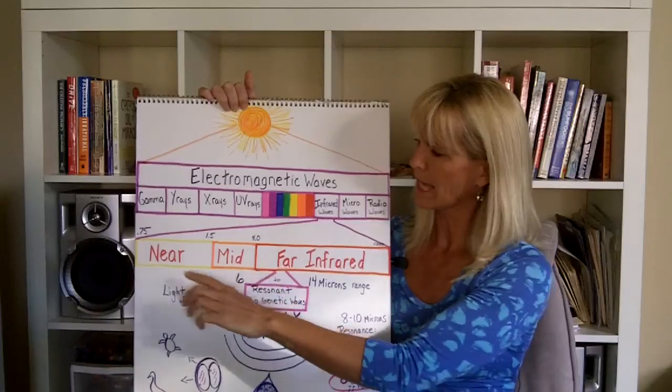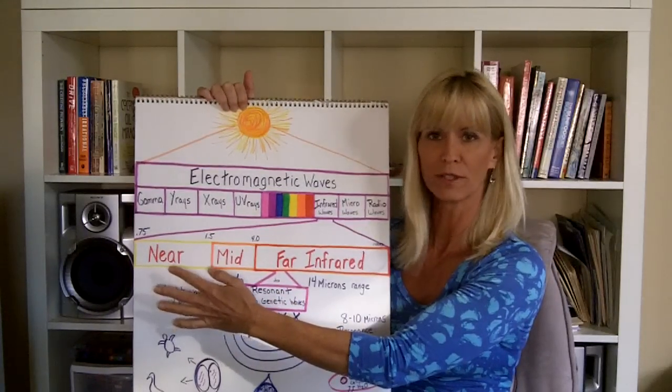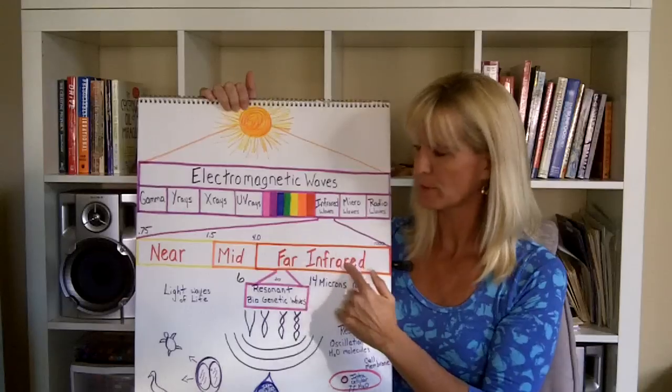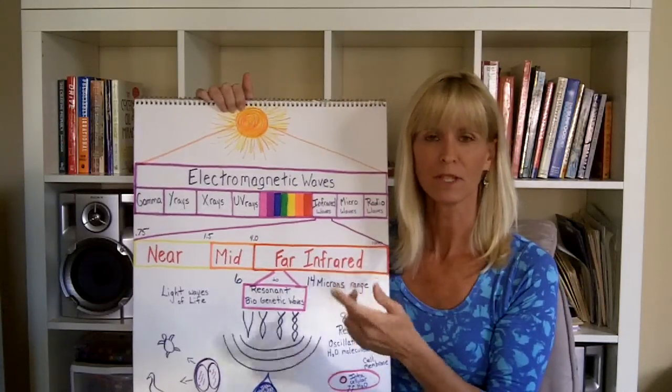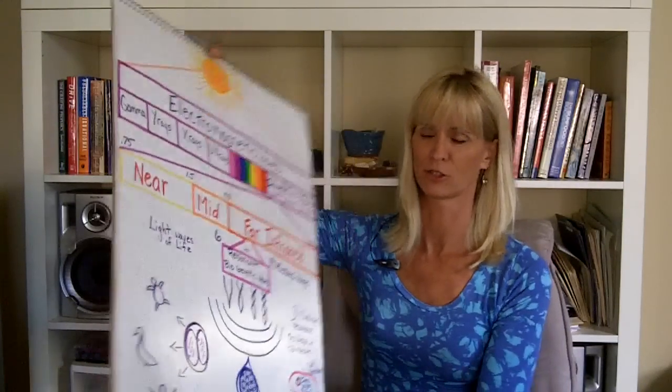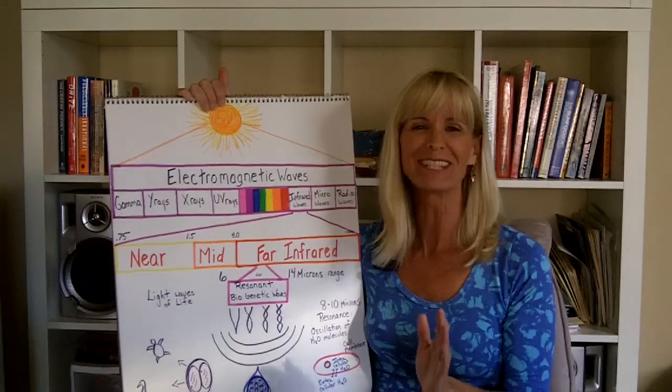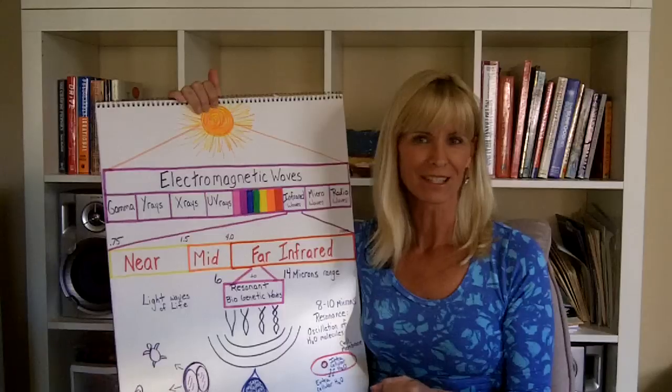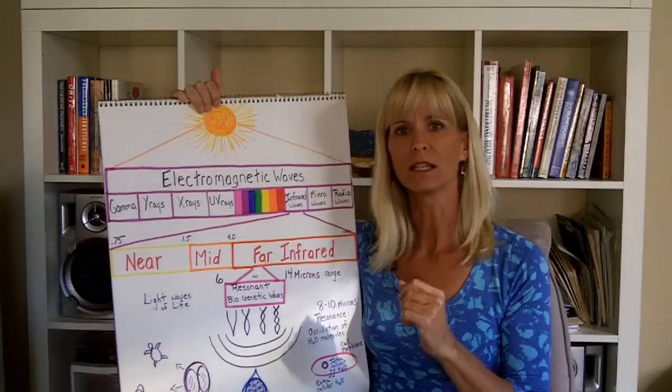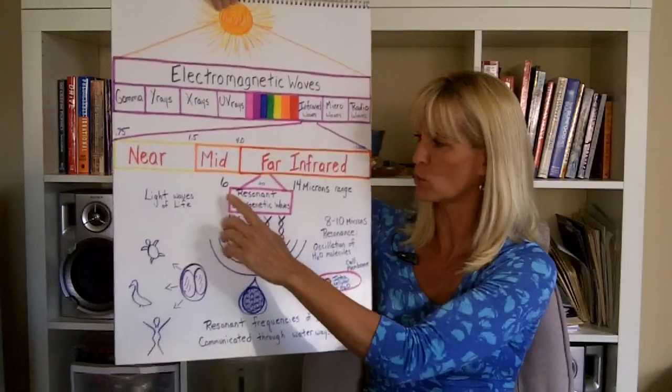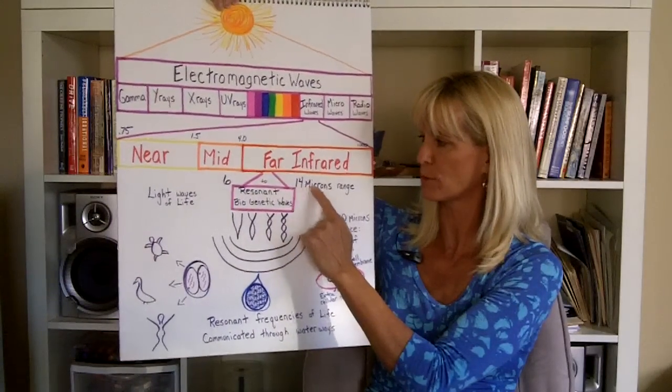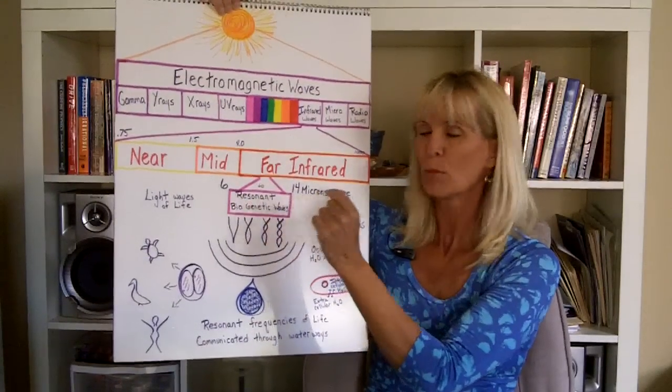In that range they've been called the near, mid, and far infrared wavelengths. Now in the field of biotechnology, what they discovered was that the far infrared wavelength between the range of 6 and 14 microns played a very important part in the formation and growth of all living things.